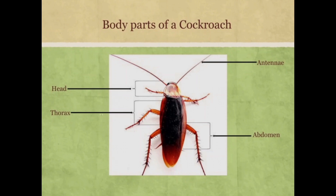Insects use their antennae to feel and sense what is happening around them. The abdomen is where the insect's other body parts are found. Its head contains its eyes and mouth. The thorax is the part of the chest of an insect.